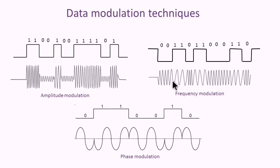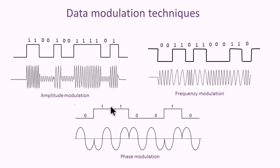The frequency of the carrier wave changes in accordance with the data signal to be transmitted. FM is less affected by noise compared to AM. With phase modulation, the phase of the carrier frequency varies with the amplitude variations of the data signal to be transmitted.